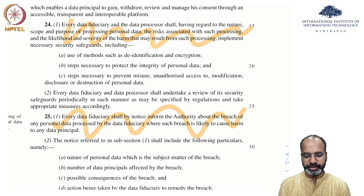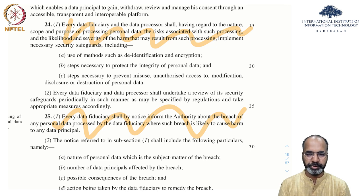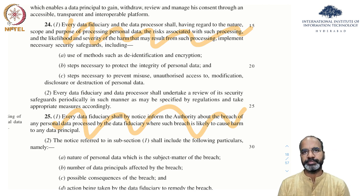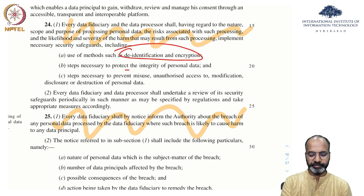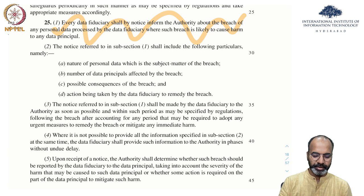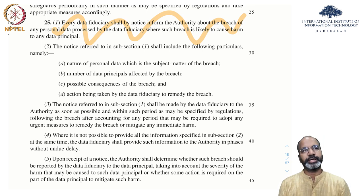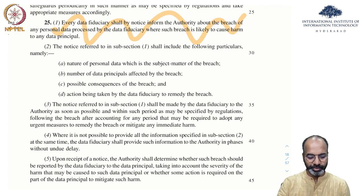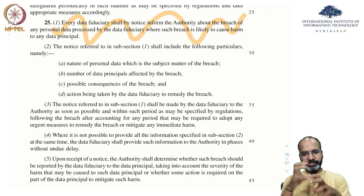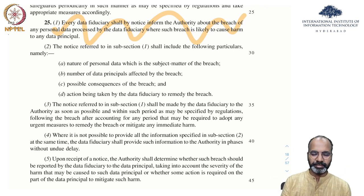Every data fiduciary and data processor shall, having regard to the nature, scope, and purpose of processing personal data, the risks associated with such processing, and the likelihood and severity of harm that may result, implement necessary security safeguards including de-identification, encryption, and integrity of personal data. All of this we have seen in the past. I'm hoping you'll connect the dots — we've seen many concepts in class and they're all coming together in this PDP bill, and you'll see the connection in GDPR also.